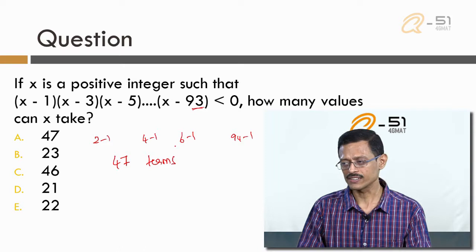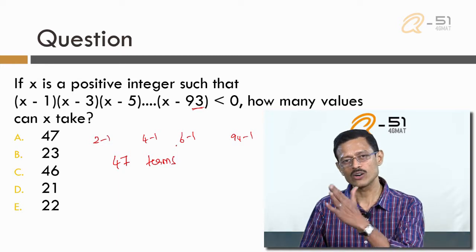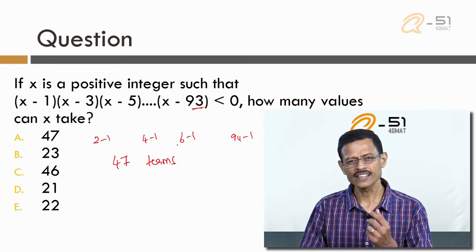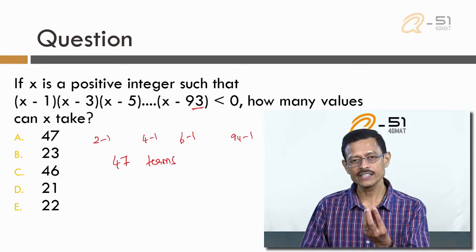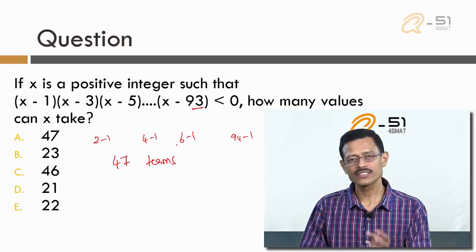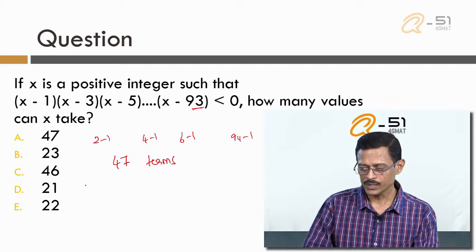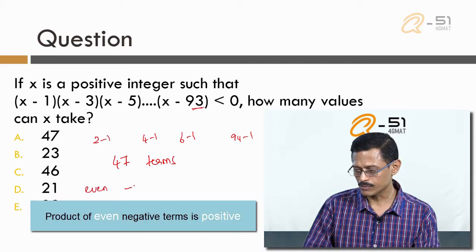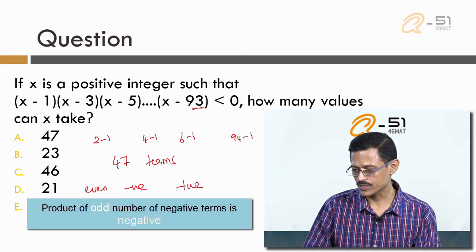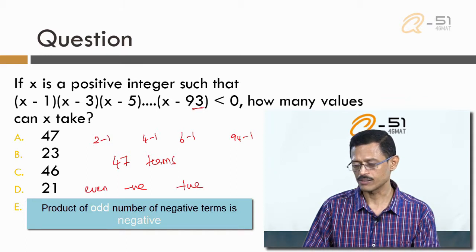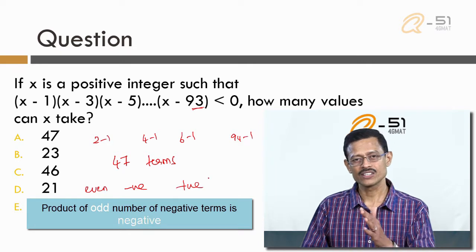The second important thing: we want the product of all 47 numbers to be negative. A quick recap on product signs — the product of 2 negative numbers is positive; the product of 3 negative numbers is negative; the product of 4 negative numbers is positive. So an even number of negative numbers multiplied gives a positive result, while an odd number of negative numbers multiplied gives a negative result.